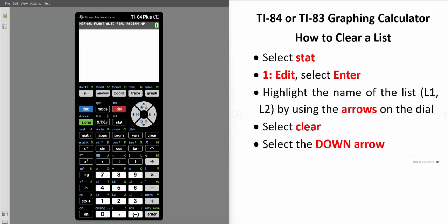We can always delete an entry in a list by selecting the Delete key. This is the DEL key to the left of the dial. But what if we want to clear all the entries in a list? Here's what we do.